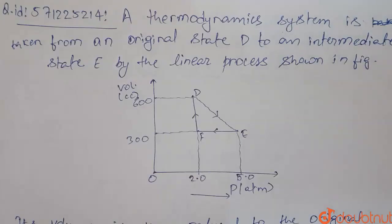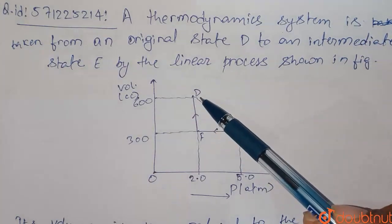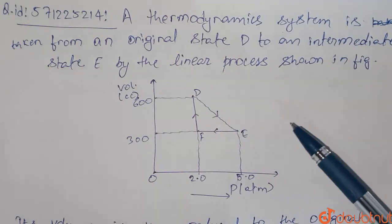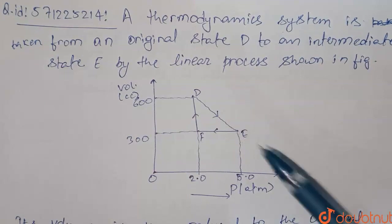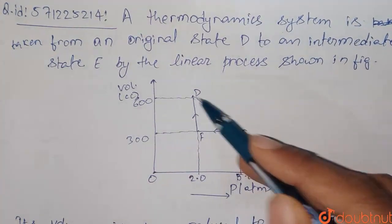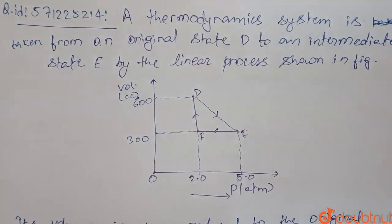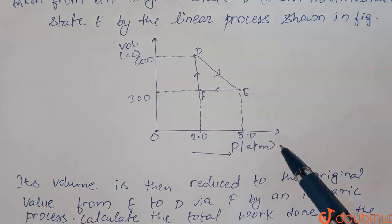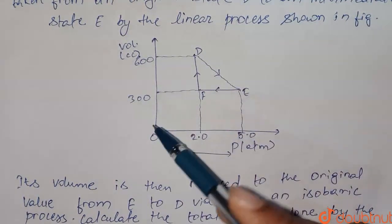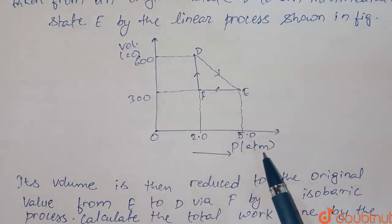Hello students, welcome to Doubtnet. The question is: a thermodynamic system is taken from original state D to an intermediate state E through a linear process, as shown in the figure. Please note here that this axis is of pressure and this is of volume, and unit of volume is given in cubic centimeter, and pressure unit is in atmosphere.